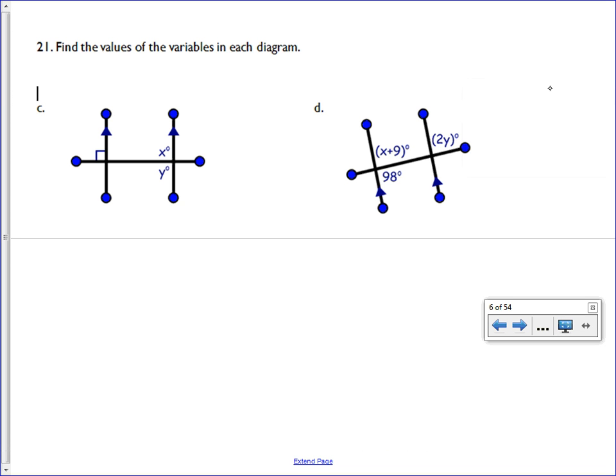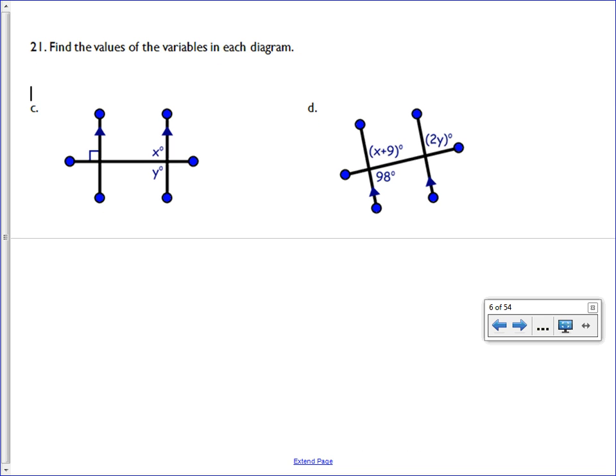Okay, here's problem number 21, C and D. What's true about X and this angle that has a measurement of 90 degrees? They are corresponding. And what's true about corresponding angles? They are congruent. So X is equal to 90 degrees.